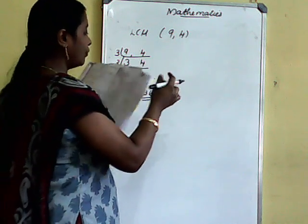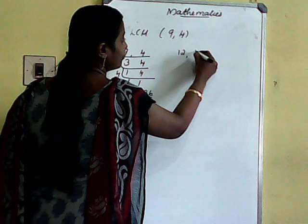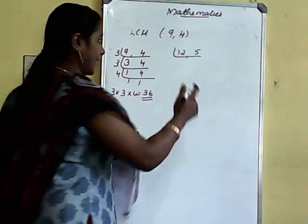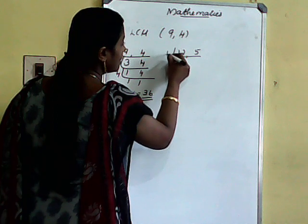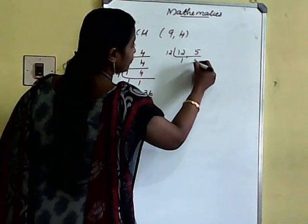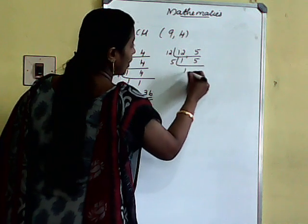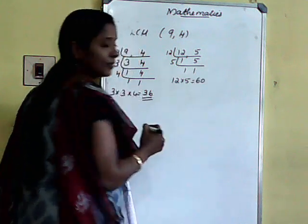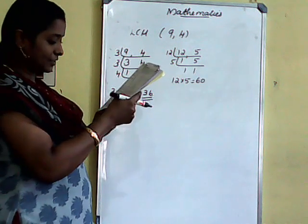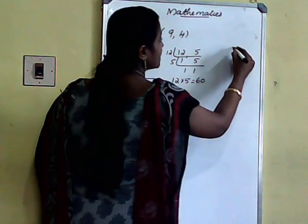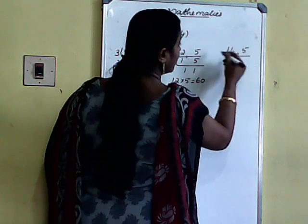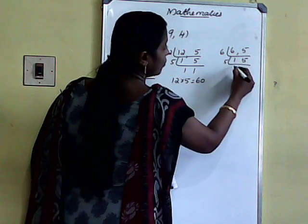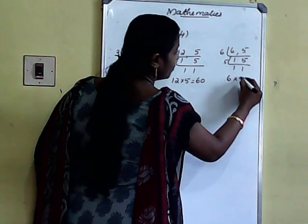LCM of 12 and 5: 12 into 1, 5 into 1. LCM = 12 × 5 = 60. LCM of 6 and 5: 6 into 1, 5 into 1. LCM = 6 × 5 = 30. LCM of 15 and 4: 15 into 1, 4 into 1. LCM = 15 × 4 = 60.